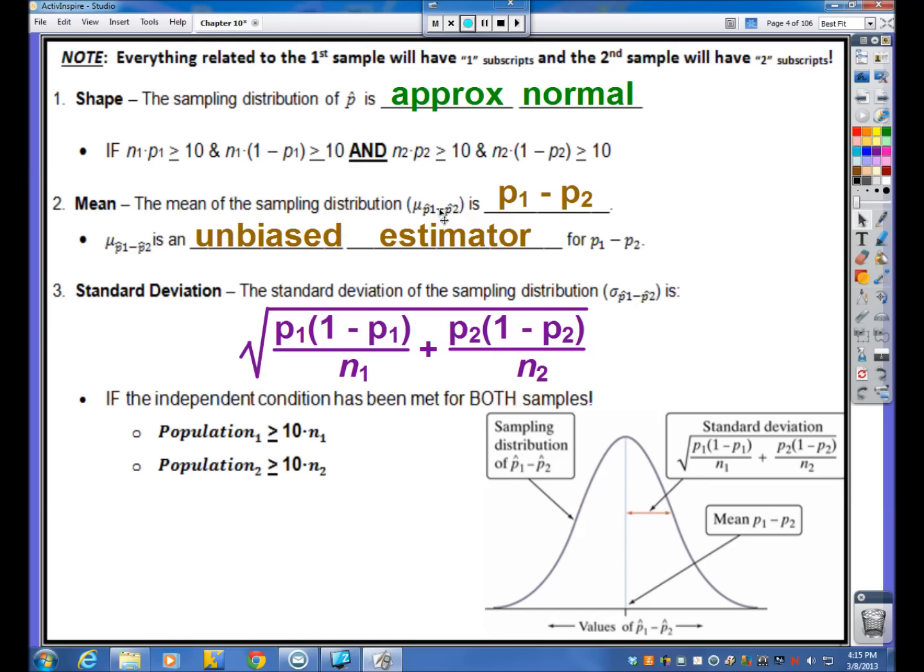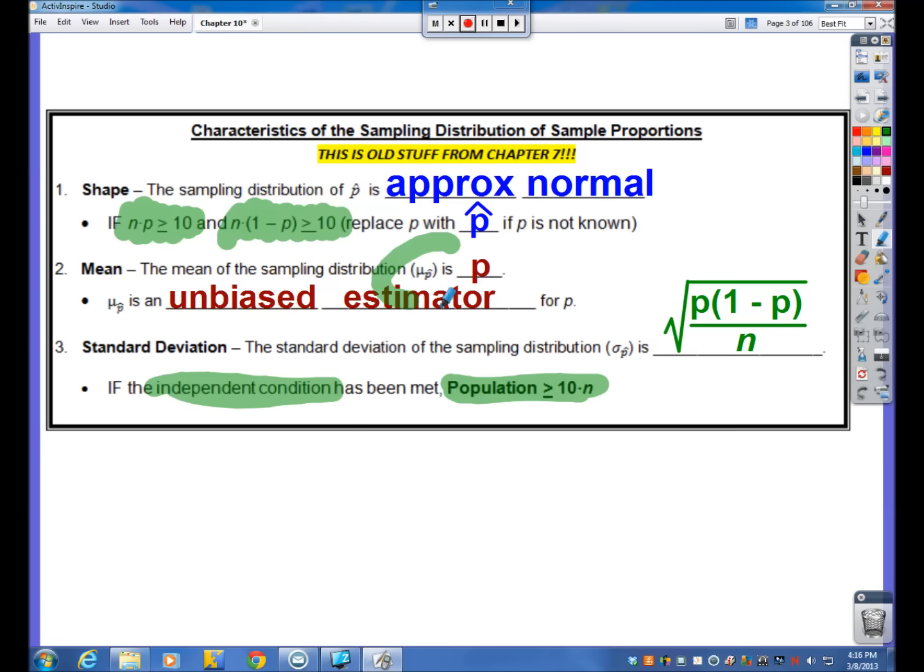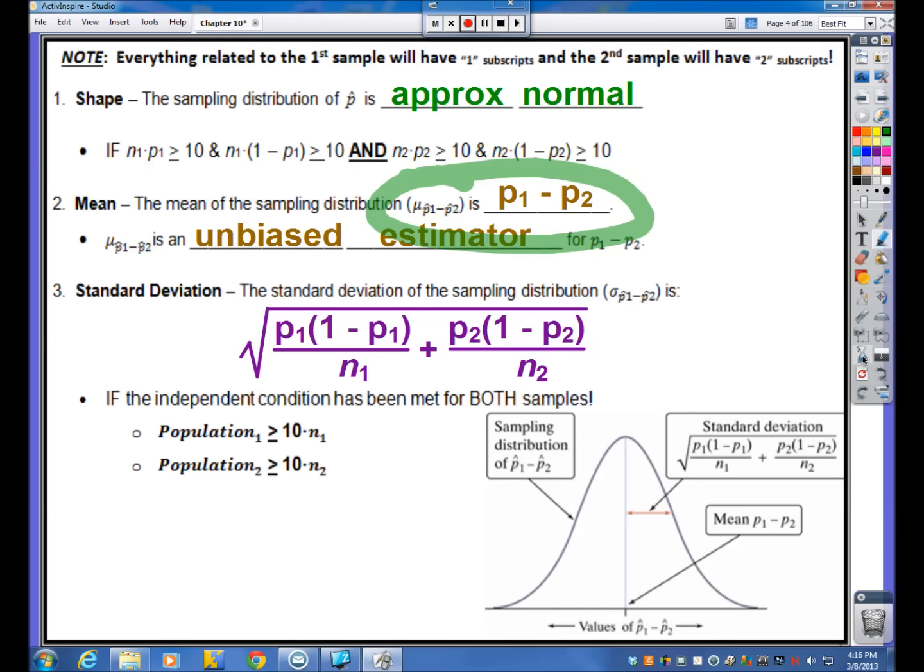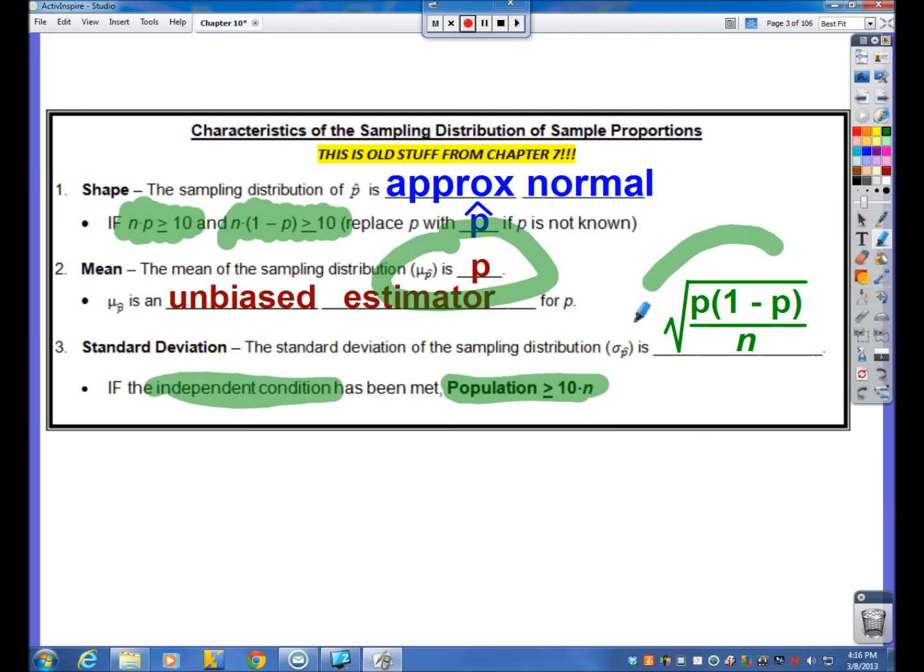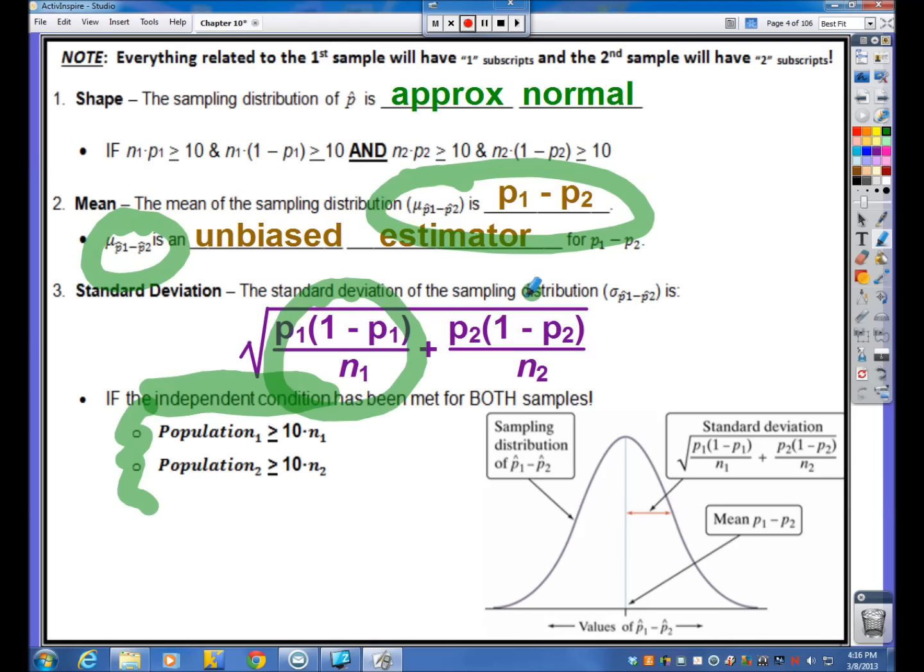So, the mean of all p-hats from two samples subtracted against each other is the same thing as, really, the population proportions being subtracted from each other. Notice how this looks very, very similar to this, except now it's doubled in size. We now have two proportions to discuss. Again, this mu sub p1 hat minus p2 hat is an unbiased estimator for our population mean here. Standard deviation. Before I jump into the formula, we still have to check the independent condition. But, again, it is doubled in size. We have to check it for both of our samples. So, again, look at this. This is for one sample. Now, notice it's basically doubling in size underneath the square root. We now have two of those, one for each sample.